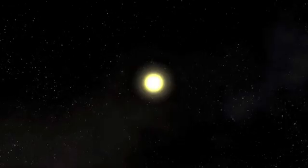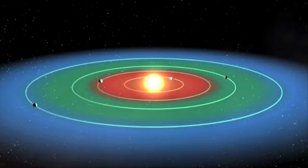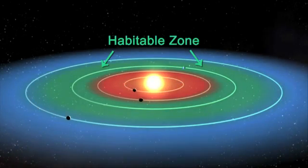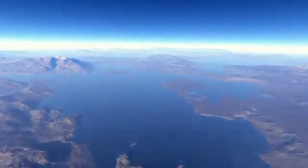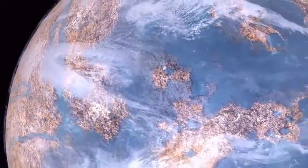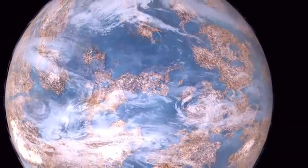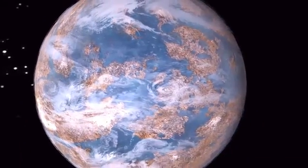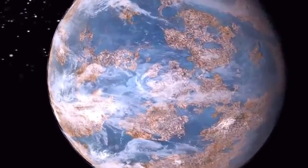Among the 1,100 planet candidates, the Kepler science team has found 54 that are orbiting in their star's habitable zone, a region where liquid water could exist on the surface of a planet. Five of those candidates are near-Earth size, and the other 49 range in size from twice the size of the Earth to larger than Jupiter.